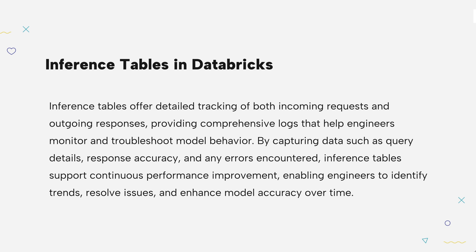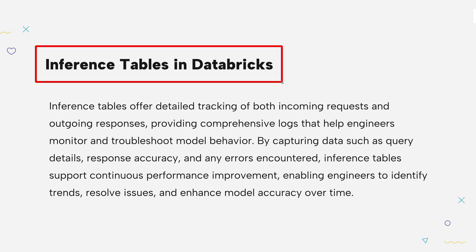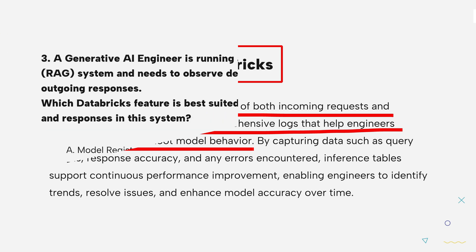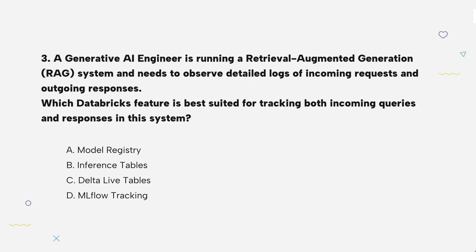The knowledge point of this question is inference tables in Databricks. Inference tables track every request and response, making it easy to see how the model is performing. By checking these logs, engineers can spot issues, understand what's working well, and fine-tune the model to respond more accurately. Inference tables record what goes into and comes out of the model, helping track the system's performance and making it easier to spot and fix problems.